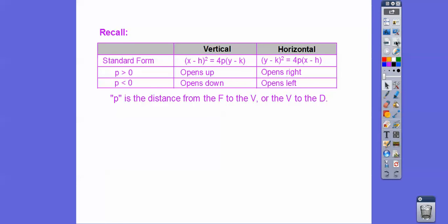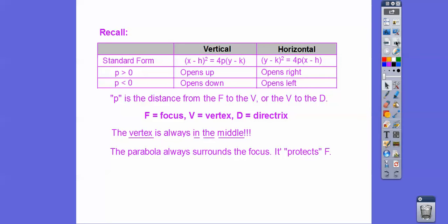p is always your distance from the focus to the vertex, or the vertex to the directrix. We'll label the focus as F, vertex as V, and directrix as D. The vertex is always in the middle and the parabola always surrounds the focus — it always protects it.